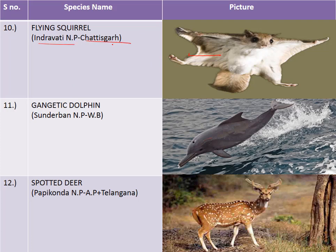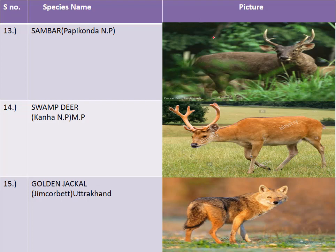The gangetic dolphin is a key species of Sundarbans National Park and also inhabits the Ganga river. The spotted deer and sambar are key species of Papikonda National Park on the Telangana and Andhra Pradesh border. The swamp deer belongs to Kanha National Park in Madhya Pradesh. The golden jackal is a key species of Jim Corbett National Park in Uttarakhand.